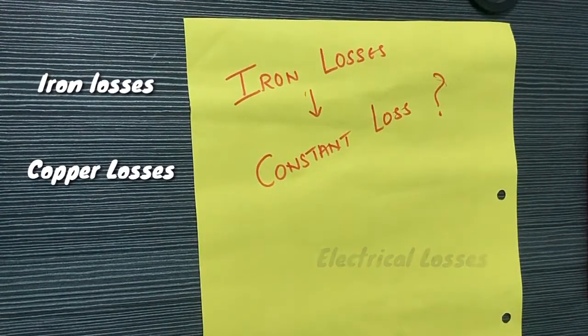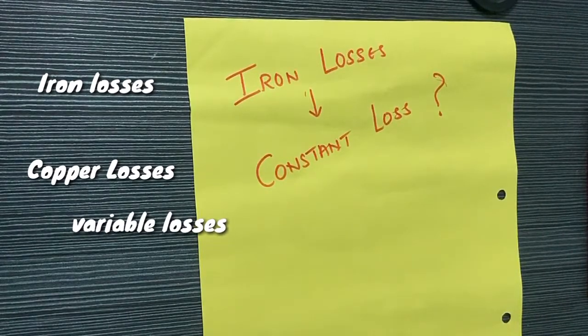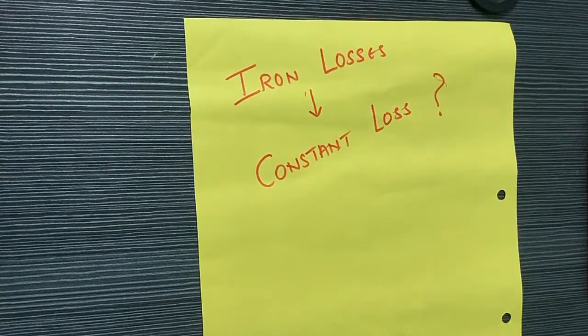is iron and copper losses, where copper losses are variable losses because they depend upon the current that everyone knows, and the current changes in the machine from time to time. So copper losses are variable, that's fine.